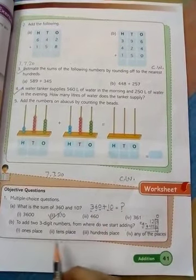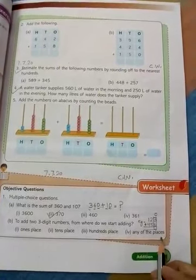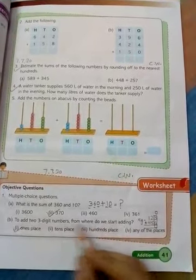What are the options? Ones place, tens place, hundreds place, any of the places. The answer is ones place. Okay?